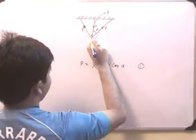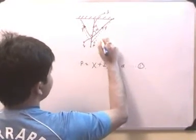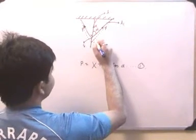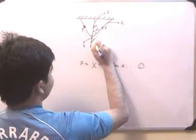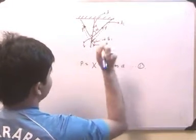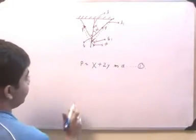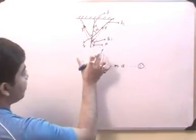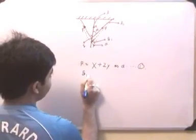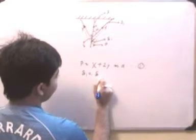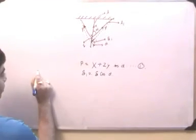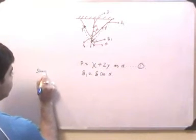The vertical bar has increased its length by delta, and this inclined member, which has original length l1, has increased its length by delta_1, where this angle is equal to alpha. From here we can establish a relationship between the deformation of the inclined bar and the vertical bar: delta_1 is equal to delta times cos alpha.